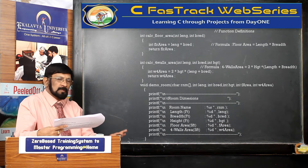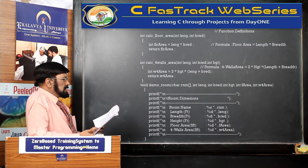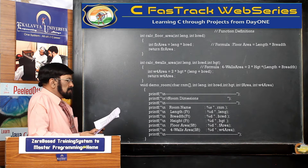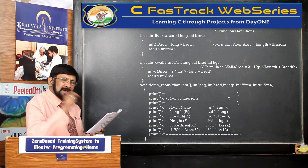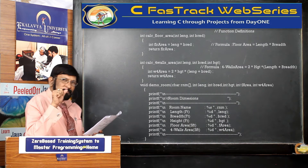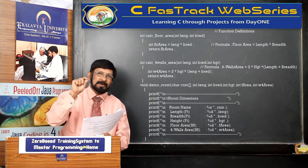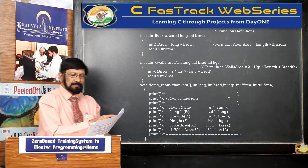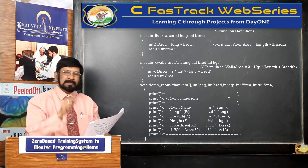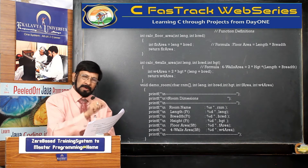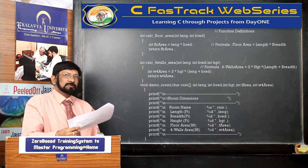First function definition: calculate floor area. For that, int length and breadth — the parameter names are length and breadth. Because the actual argument names, length and breadth, are defined. If you want to write length and breadth here as parameter names too, you can — but what do you think? That and this are not the same.